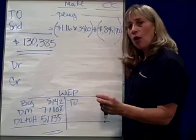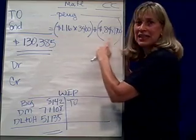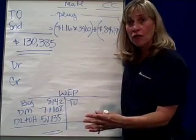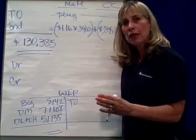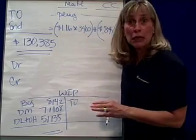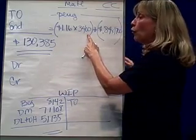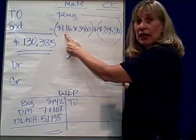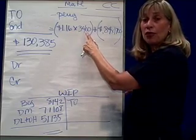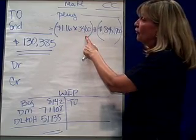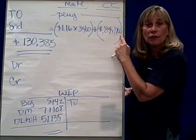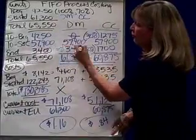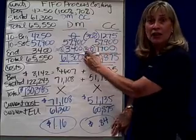The easiest way to assign the cost is to first find the ending inventory. Because if I know the cost of ending inventory, I know that all the rest of the cost transferred out — it's easier to just plug it. So what we're going to do is say: what were my equivalent units for materials and multiply that by $1.16. Looking at step two, there were 3,400 equivalent units of effort for materials and 1,700 equivalent units of effort for conversion. You can see the 3,400 and the 1,700 there.